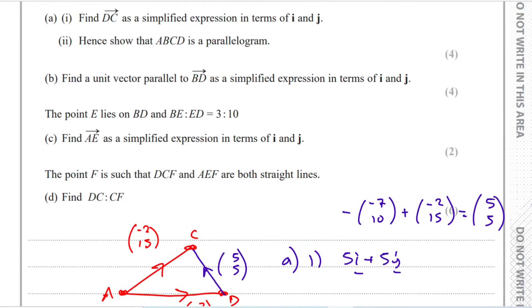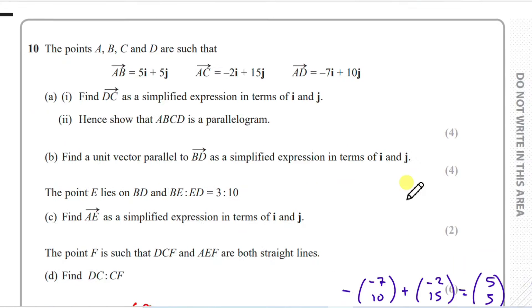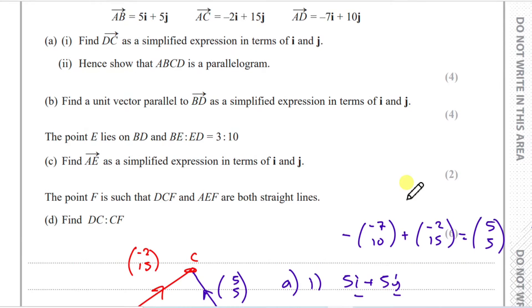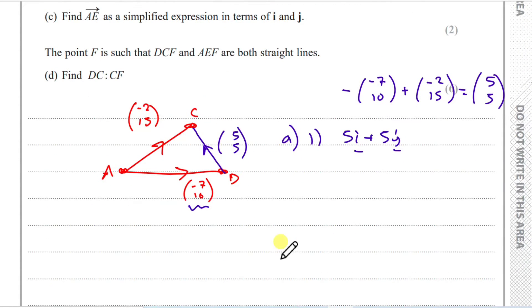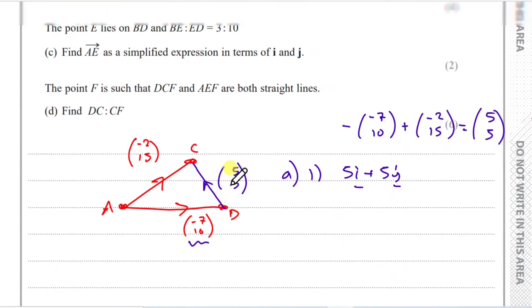Next part, hence show that ABCD is a parallelogram. To show something is a parallelogram, then we need to somehow show that there's two parallel lines. So there's a pair of parallel lines. Let's try and see if we can find them. So we've got CD, which is 5, 5.